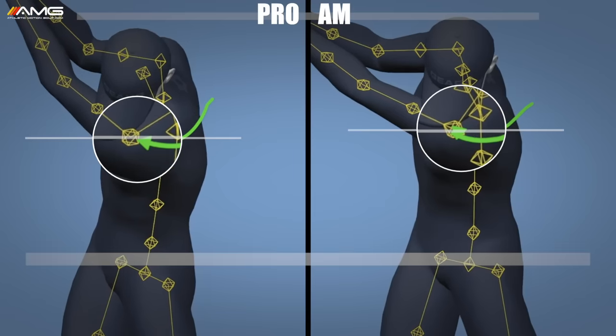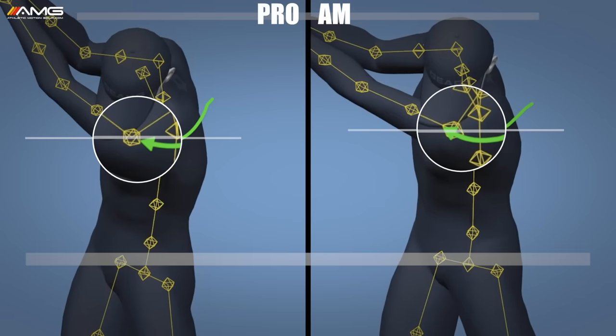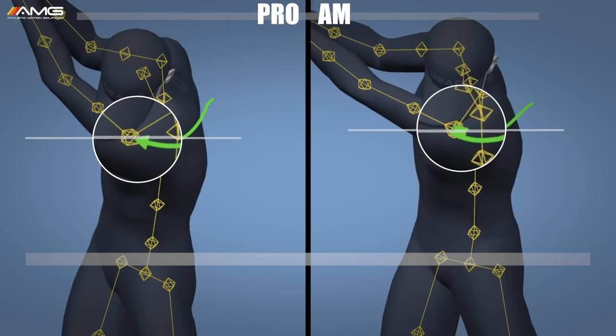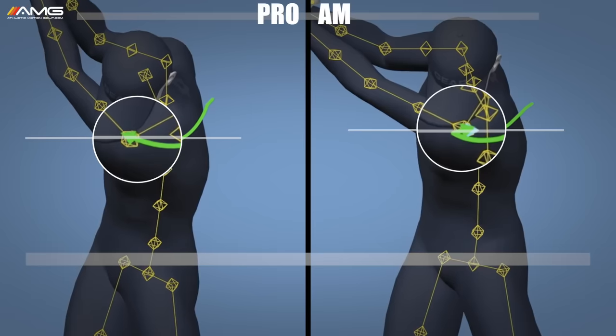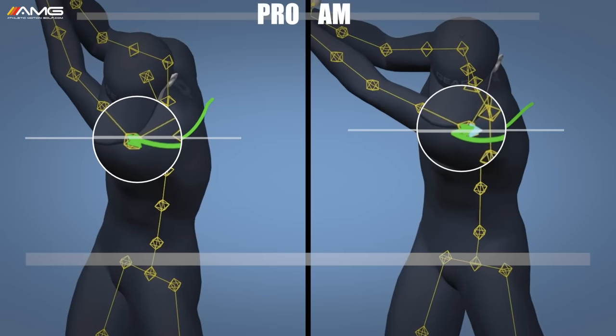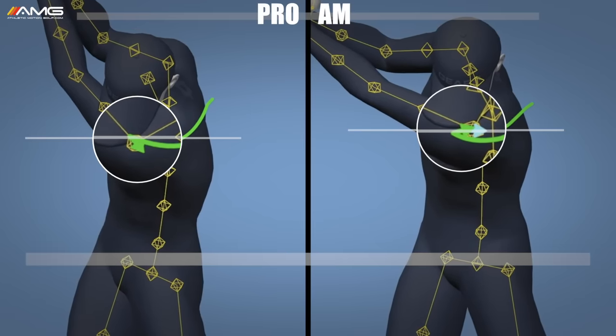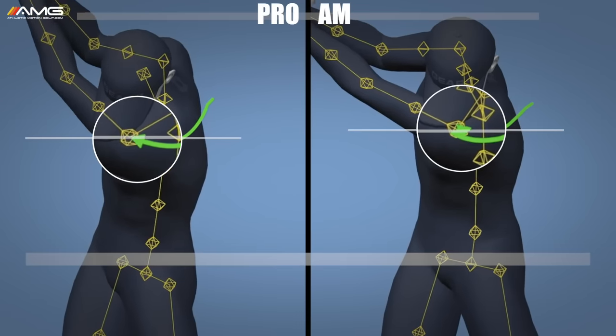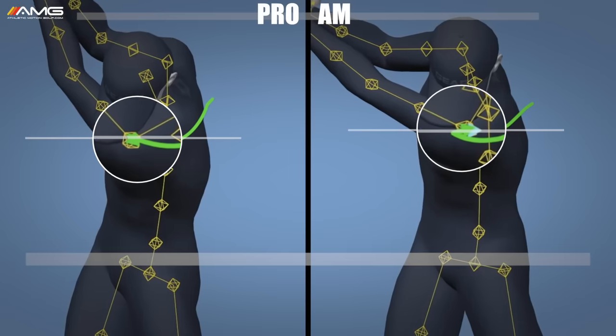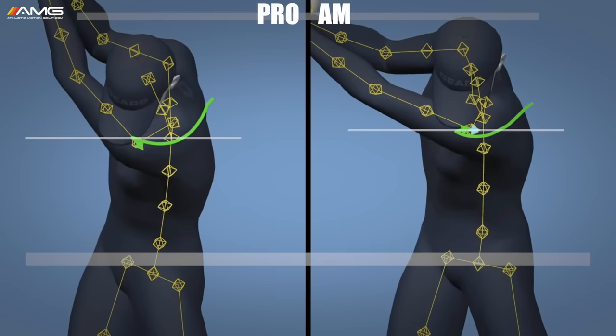That is a significant difference and really the crux of what we hope you take away from this. Our professional golfer is really drifting himself forward and downward into that left leg that allows him to generate a tremendous vertical force that he can use later in the golf swing. Our amateur golfer is now kind of coasting to the side and up a little bit. We can see a stark difference in the pelvis movements here as well.